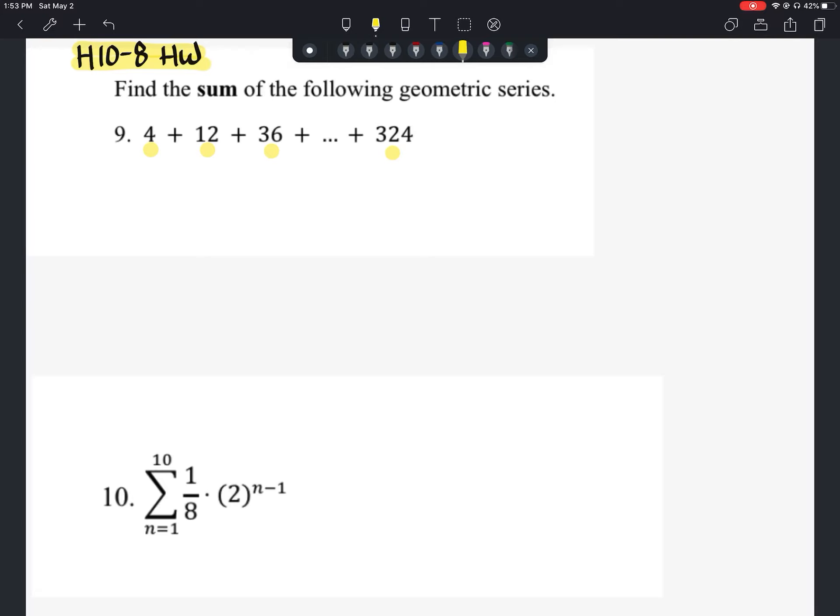So because it's a geometric series, we know that there is some sort of multiplication going on here. It looks like we're multiplying times 3 each time. So we know then that r is going to equal 3. That's our geometric ratio.